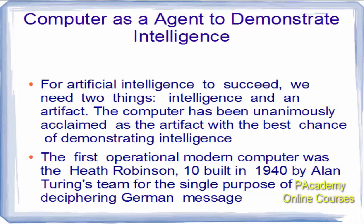Computer as agent to demonstrate intelligence: for artificial intelligence to succeed, we needed two things — intelligence and an artifact. The computer has been unanimously acclaimed as the artifact with the best chance of demonstrating intelligence. You needed an object which could demonstrate intelligence, and that demonstration was possible by the computer invented in the 1950s, which led to the possibility of AI systems and the study of the AI field.